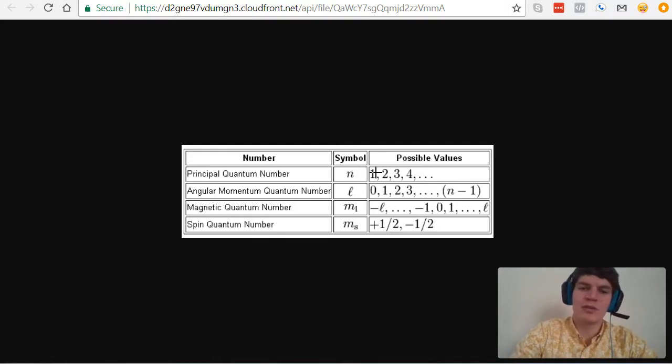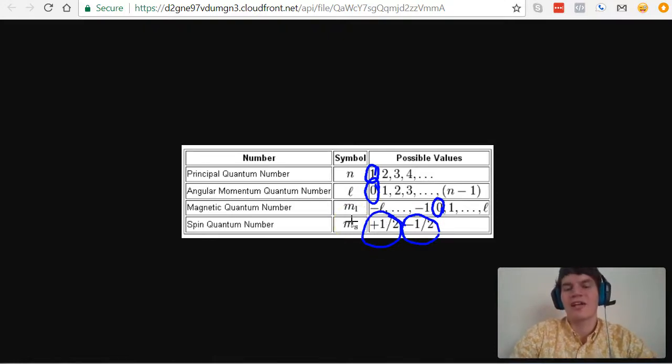So if their principal quantum number was 1, and their angular momentum number was 0, and their magnetic quantum number was 0, and their spin quantum number was negative 1 half, we cannot have another electron with these exact same four numbers. We can have an electron with these first three numbers, but then plus 1 half. But we can't have another electron with the exact same quantum numbers. One way to remember this rule is that the exact same address as another electron is excluded. It's excluded as a possibility.